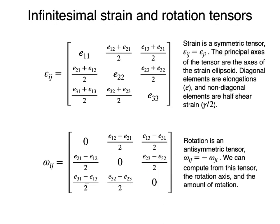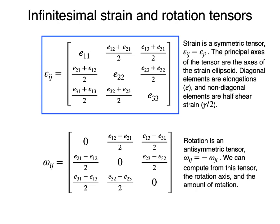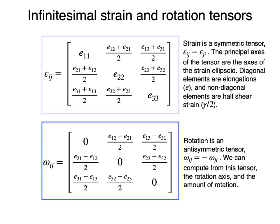The expansion of these formulas looks like this. The infinitesimal strain epsilon is a symmetric tensor. The principal axes of this tensor are the axes of the infinitesimal strain ellipsoid. The diagonal elements of the tensor are elongations along the coordinate axes, and the non-diagonal elements are half the shear strain. The infinitesimal rotation tensor is an antisymmetric tensor, from which we can compute the rotation axis and the amount of rotation. This summarizes the mathematics of infinitesimal strain.